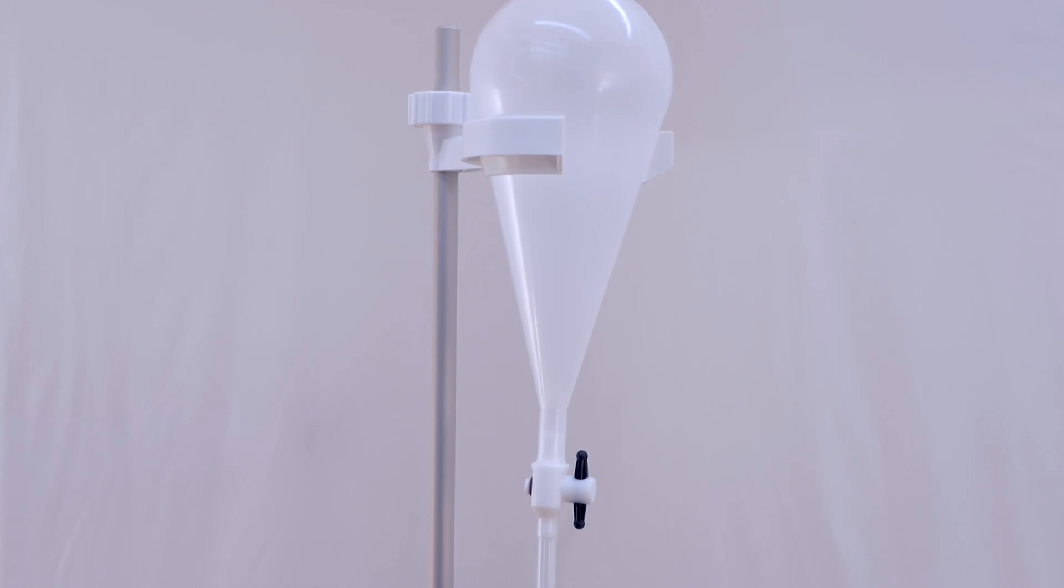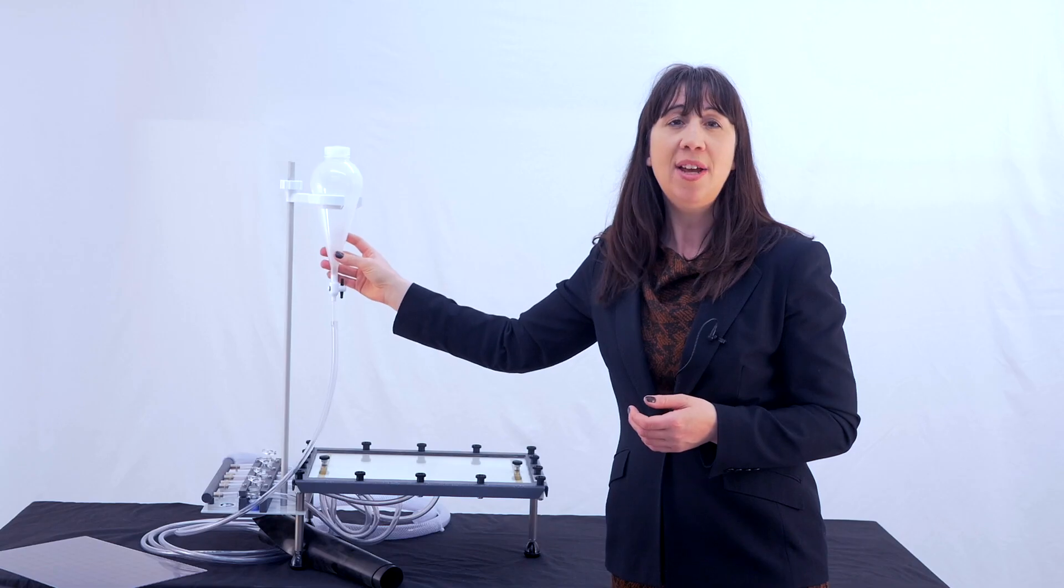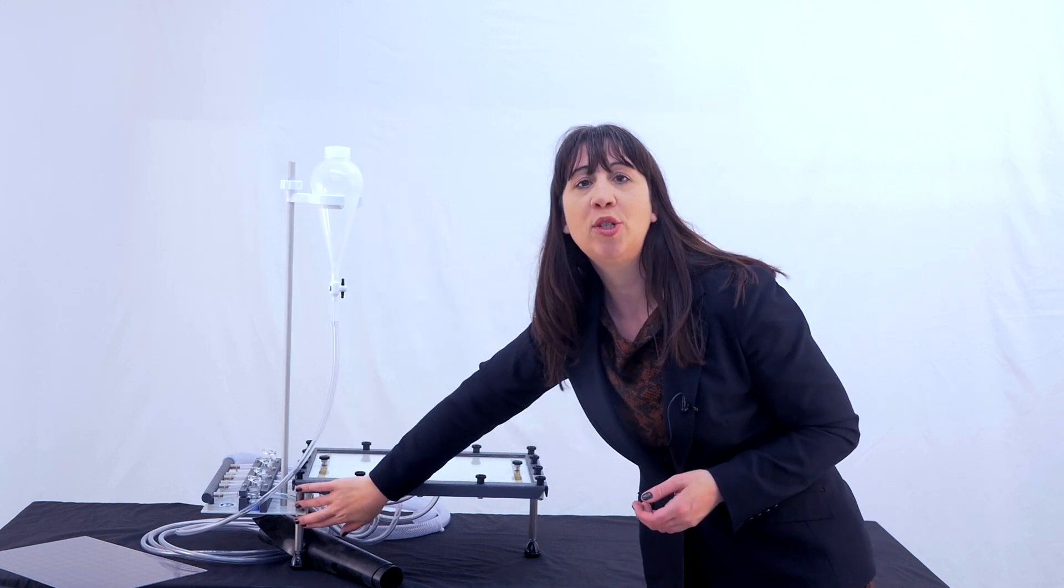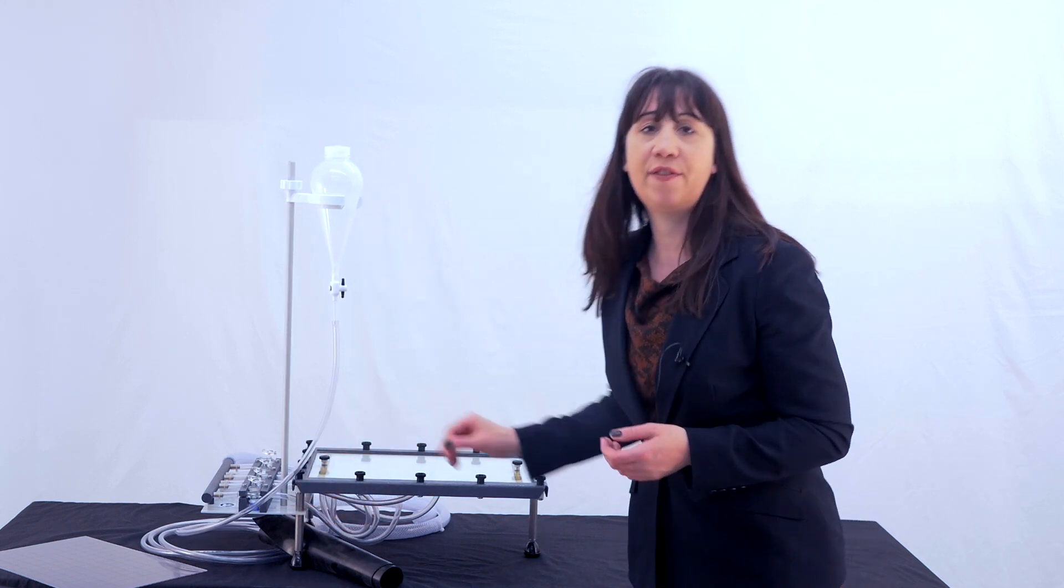A bottle holder and a support rod holds the dye bottle above the flow channel. This rod bolts to the plate down here between the supply manifold and the flow channel.